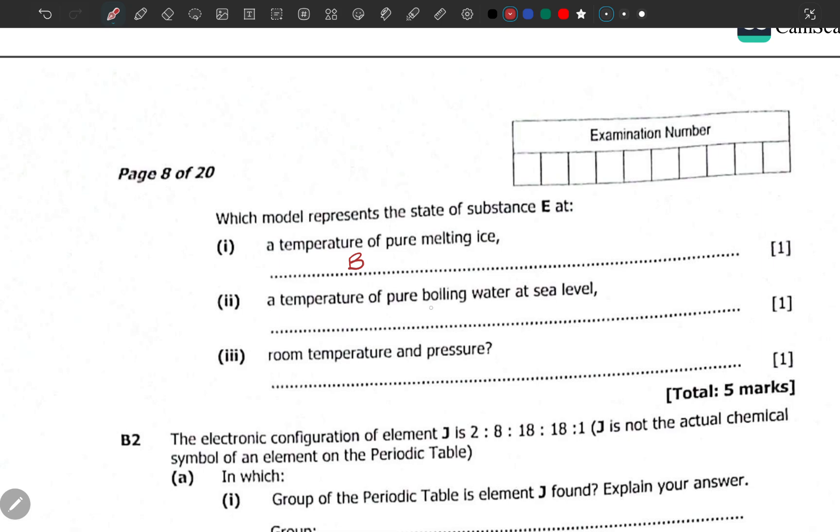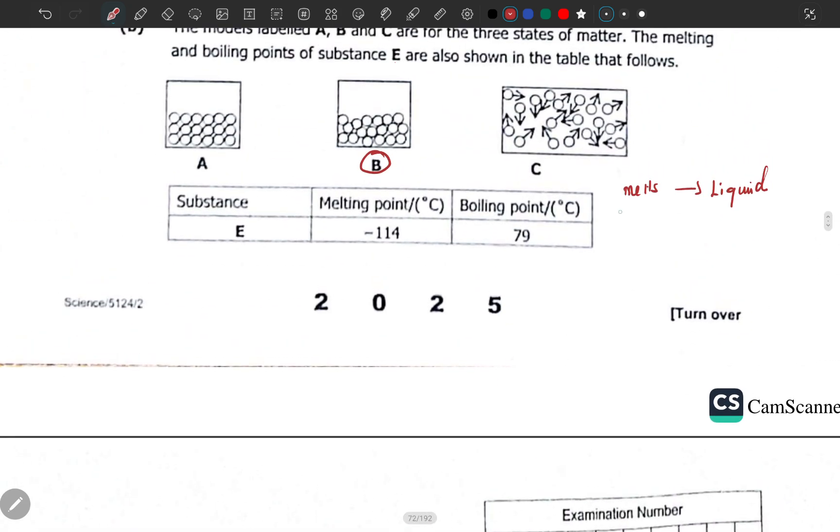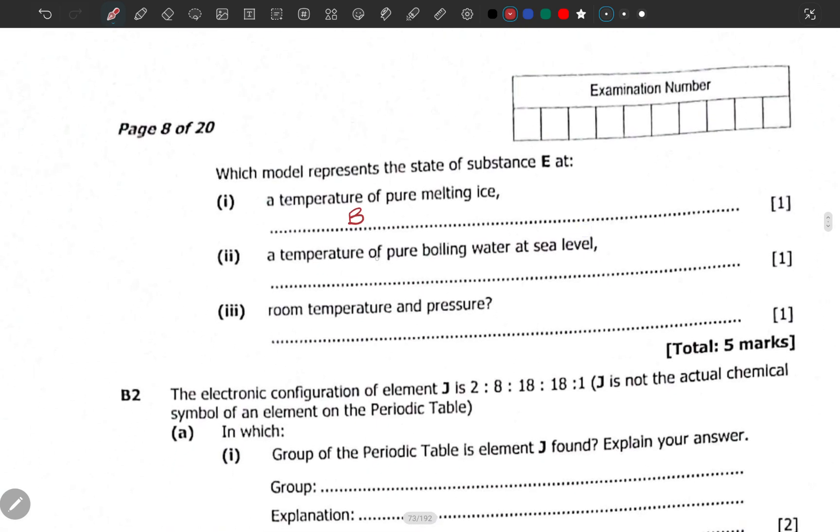At a temperature of pure boiling water at sea level, when water is boiling, it undergoes evaporation and finally turns into gas, meaning C is the correct one.